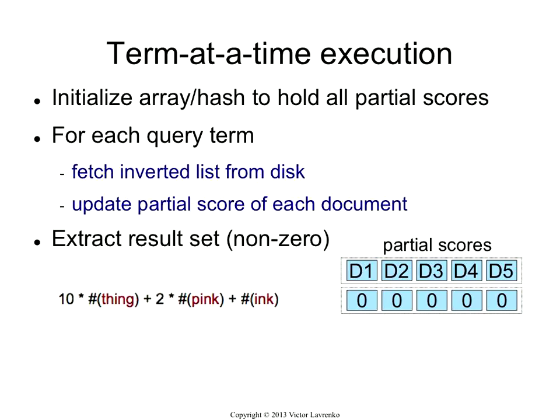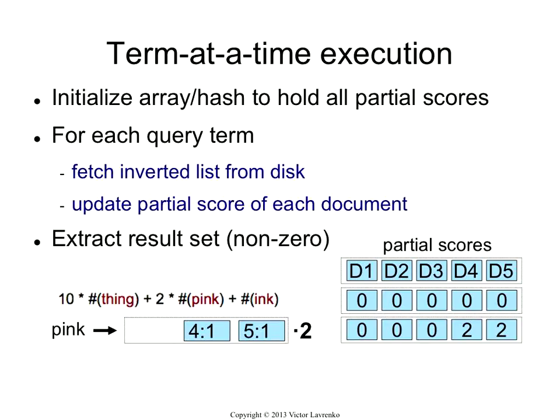Let's say I have five total documents in my collection. What I do is initialize an array that has a slot for each one of the documents. Then I fetch the inverted list for pink — pink occurs once in document 4 and once in document 5, and pink has a weight of 2 in my query. I take this 2, multiply it by the frequency in each document in the inverted list, and update the score in the array. All scores start at 0, then I add the score for pink: document 4 gets a 2, and document 5 gets a 2.